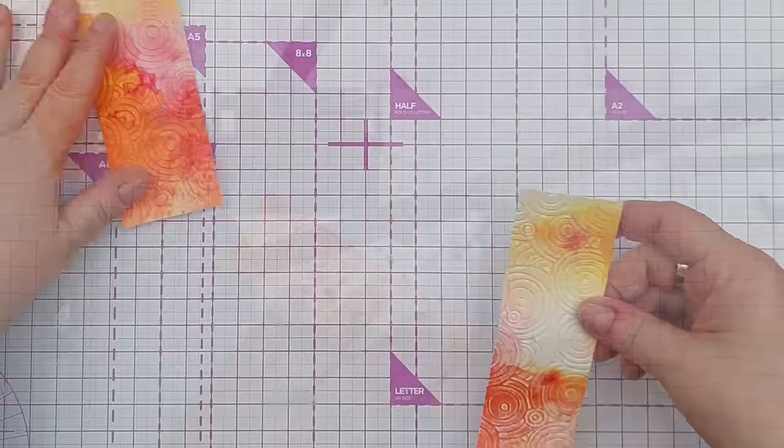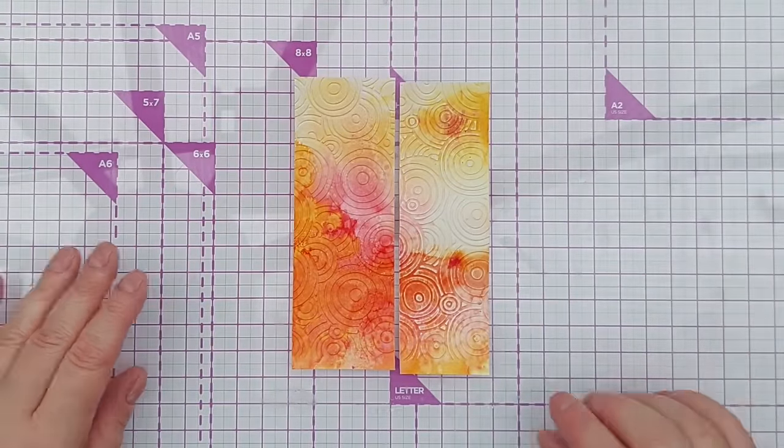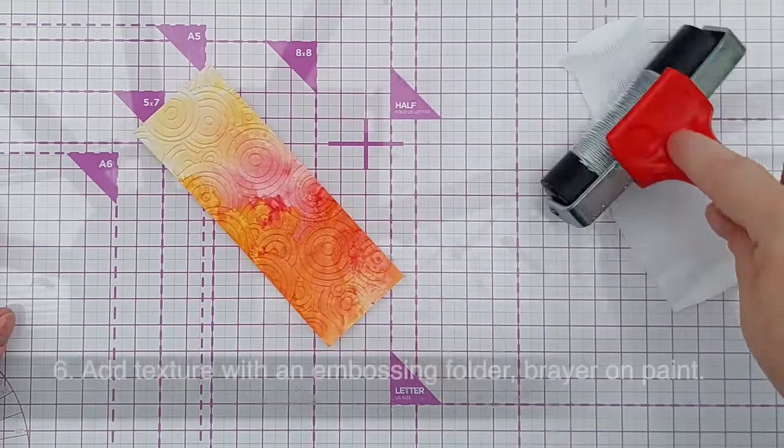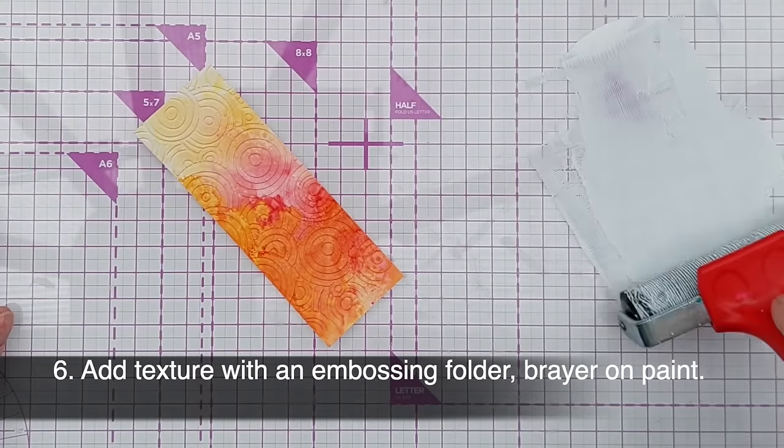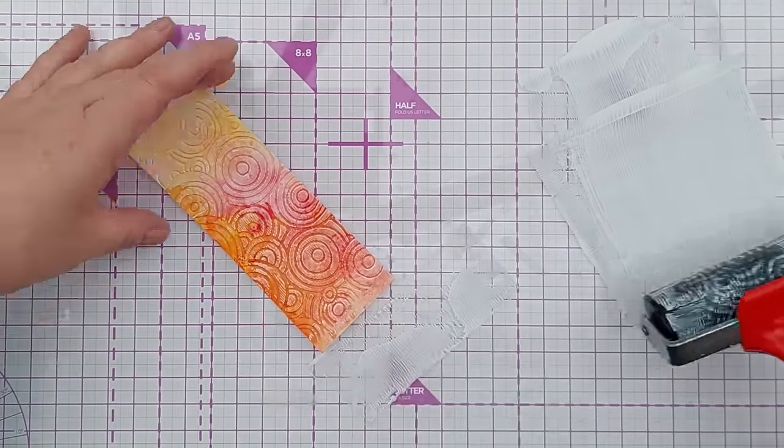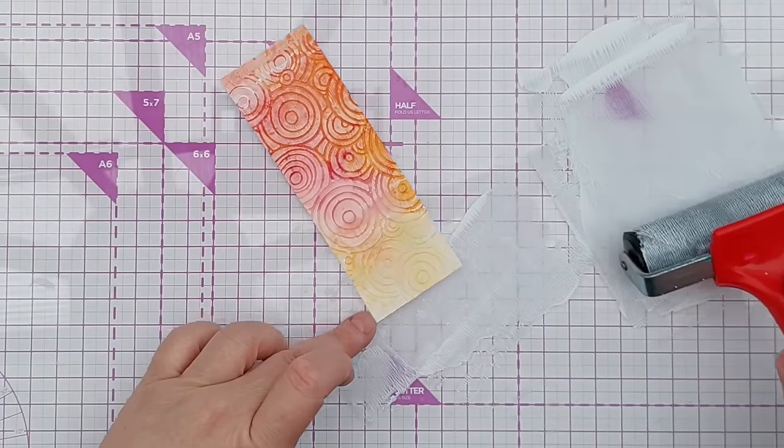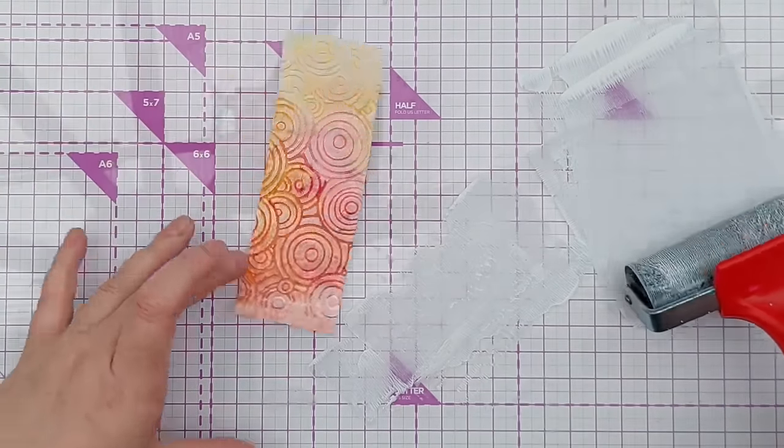But you can scrub the colour off of the raised parts of your embossed image and that has the effect of toning down the background. And finally we have technique number six which is to add texture with an embossing folder and then brayer on some white paint.